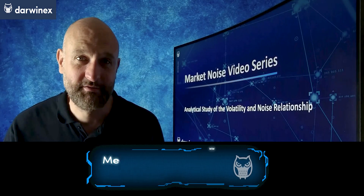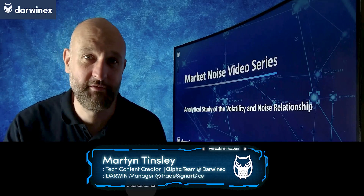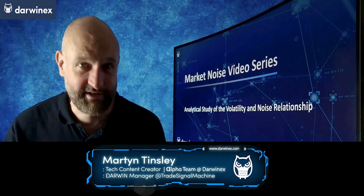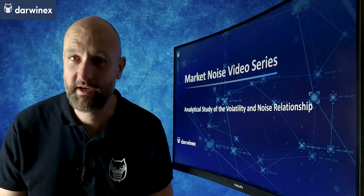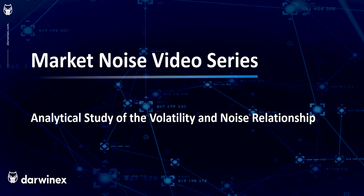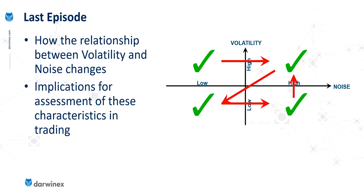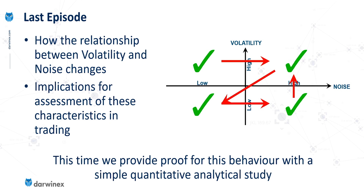Now back to today's tutorial. I'm hoping that the contents of today's episode is as much of an eye opener to you as it was to me the first time I did this piece of analysis. Let's take a look at the relationship between market noise and market volatility. In the previous episode, we looked at how the relationship between volatility and noise changes in relation to conceptual price action, and we started to consider some of the implications. This time, the analysis provides proof for this behaviour with a simple quantitative analytical study.